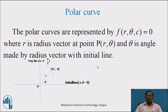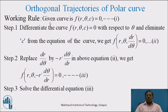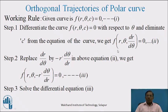Now, in this video session, we are discussing how to find orthogonal trajectories of a given polar curve. Let us start with the working rule. Let us denote the given curve as f(r, theta, c) = 0 by equation 1. In step 1, first we differentiate the given curve f(r, theta, c) = 0 with respect to theta and eliminate parameter c from the equation of the curve. We get an ordinary differential equation of the given curve as f(r, theta, dr/dθ) = 0. Denote this equation by 2.